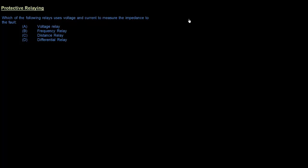Hello and welcome to another video in the PowerPE series from Movingelectrons.com. Our topic for today is going to be protective relaying. The ANSI standard C37.2 lists close to a hundred different protective relay device numbers, and that's not counting the number of suffixes and prefixes you can add to a lot of these numbers. So as you can imagine, this is a really vast topic.